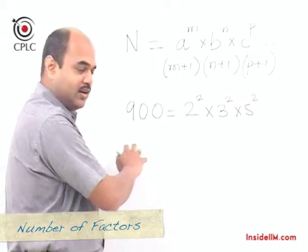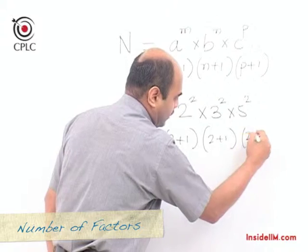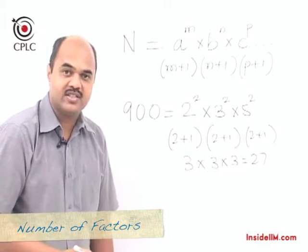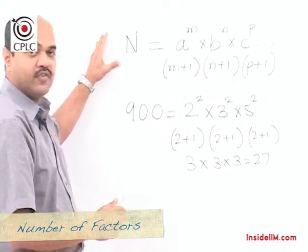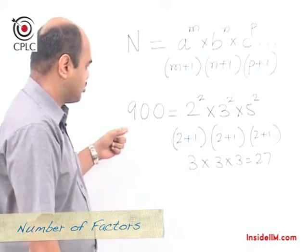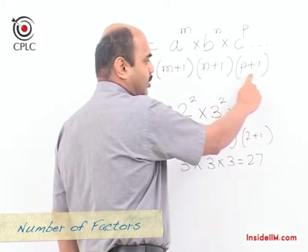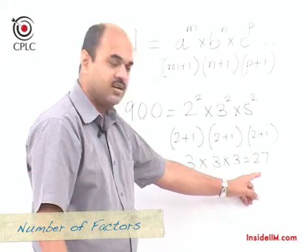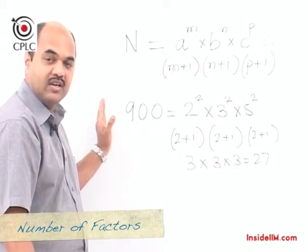For 900, if we increase each power by 1, we get (2+1)(2+1)(2+1) = 3 × 3 × 3 = 27 factors. To summarize the procedure: first express the given number in terms of its prime factors, then increase the power of each prime factor by 1, multiply the resulting numbers, and that final value — which for 900 is 27 — is the number of factors.